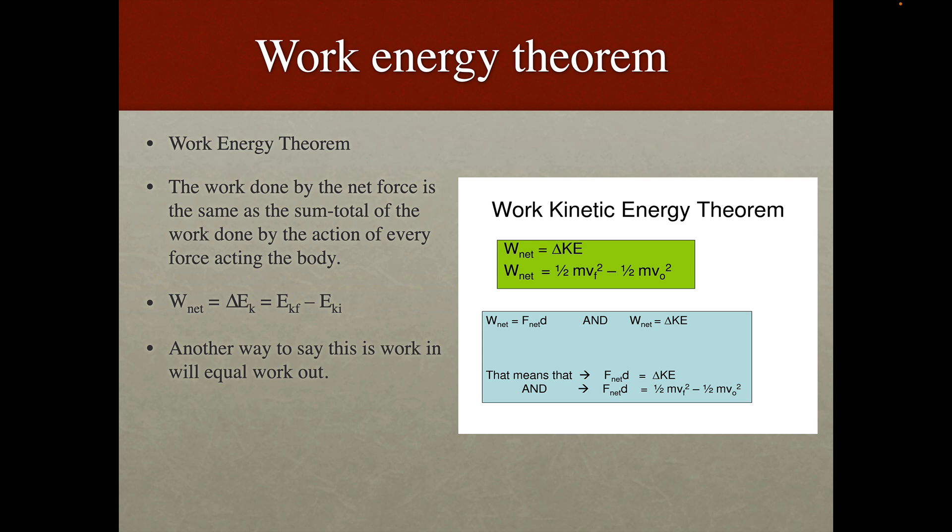Now you can see that some of the equations on the right hand side here when we say that W net equals F net times d, and you can make work net equal to delta E k, which means you can also say that F net times d equals one half mvf squared, so the final velocity squared minus one half m v0 squared or one half the initial velocity squared.